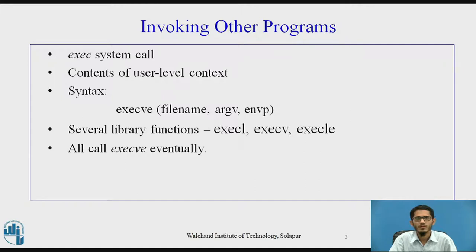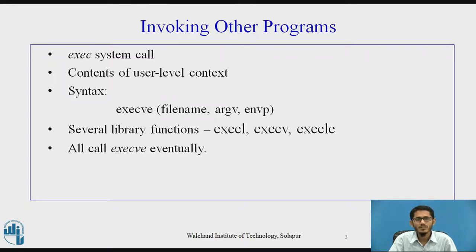The exec system call invokes another program, overlaying the memory space of a process with a copy of an executable file. The contents of the user-level context that existed before the exec system call are no longer accessible afterwards, except for the exec's parameters, which the kernel copies from the old address space to the new address space.